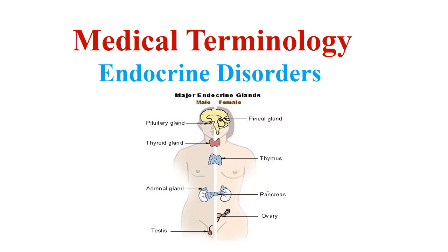The endocrine glands we will cover include the pituitary gland, the pineal gland, thyroid gland, thymus, adrenal gland, pancreas, and in males the testis, and in females the ovary.